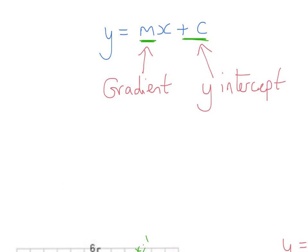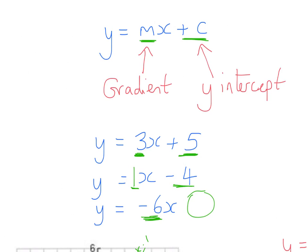So, for example, if we had y equals 3x plus 5, we could tell that the gradient was 3, and the y-intercept was 5. Or if we had y equals x minus 4, we could tell the gradient is the number in front of the x, so that's just a 1, that's the same as having a 1 there. And the y-intercept would be minus 4. And if we had something like this, minus 6x, well, the gradient is minus 6, and there is no y-intercept here, so it would just be 0, which means it would go through the origin.